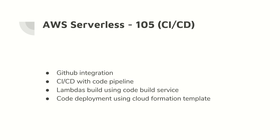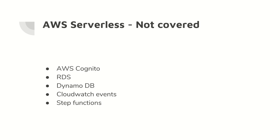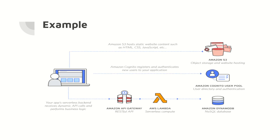What will not be covered: AWS Cognito — a service for managing user pools and authentication — is excluded to keep things simple. There is also no storage: no RDS (relational database) or DynamoDB (NoSQL database). Additionally, CloudWatch Events — which you can think of as cron jobs — and Step Functions — which allow chaining multiple Lambdas based on conditions — will not be covered in this series but may be addressed in the future.